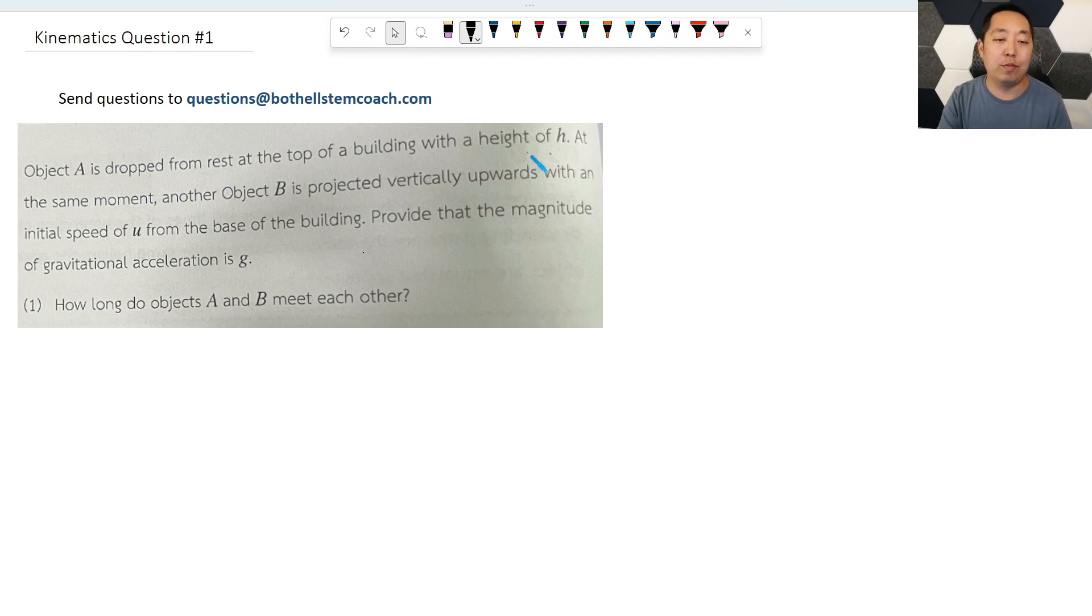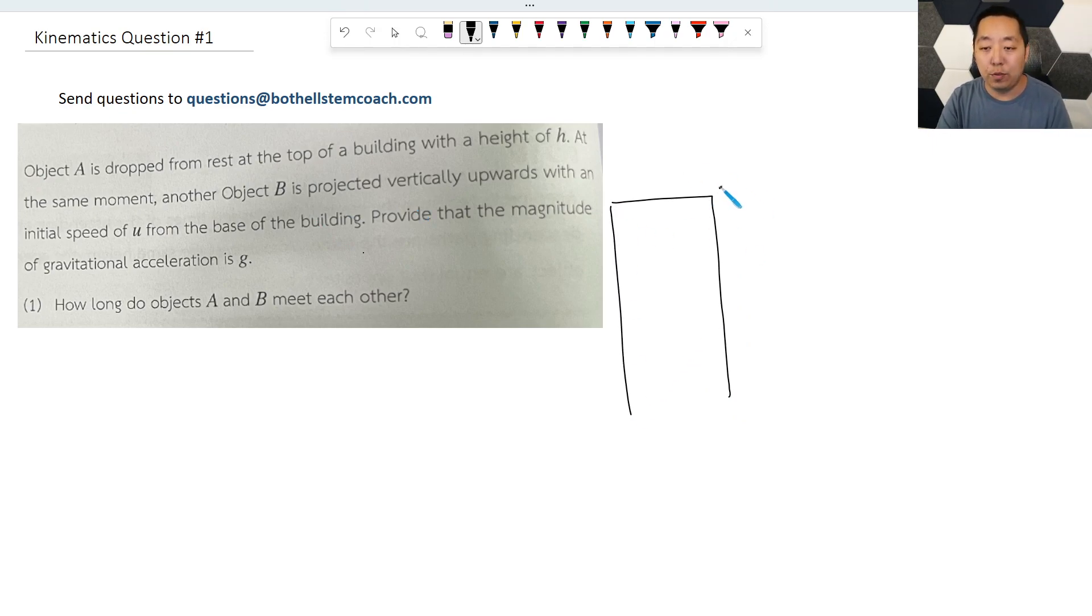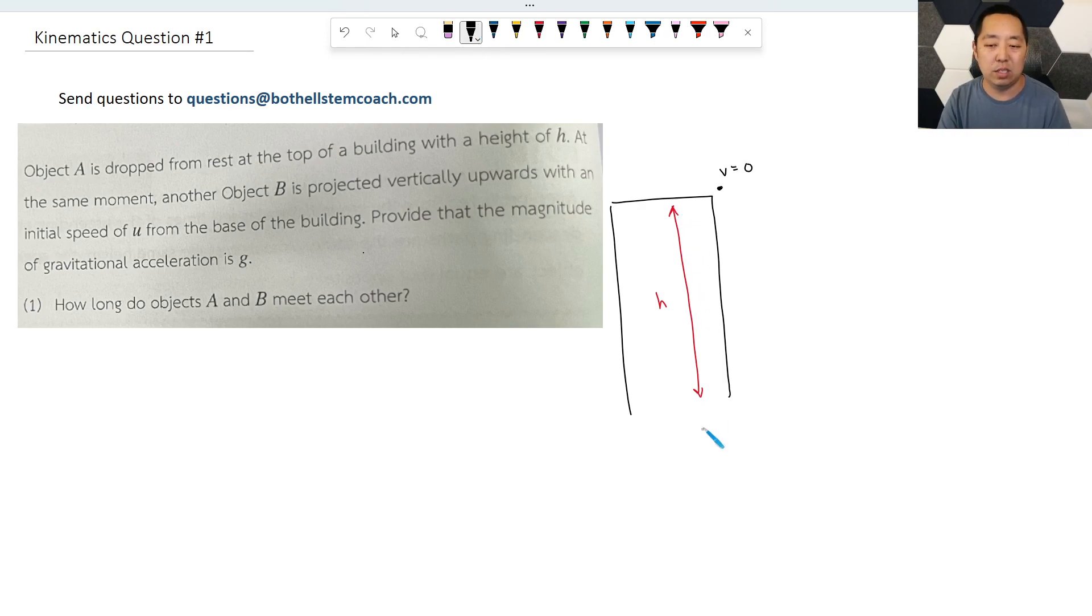Object A is dropped from rest at the top of a building. So when I'm doing this, I'm always drawing a picture, I'm not even reading the rest of the question. I'm saying I got a building here, it's dropped from rest. So here's the object, the velocity is zero, it's going to be dropped, so it's going to fall to the ground with a height H. So this building has a height H. When you're breaking down a question, it's really important, especially when there are a lot of words, I really just like to draw it as I'm reading the question.